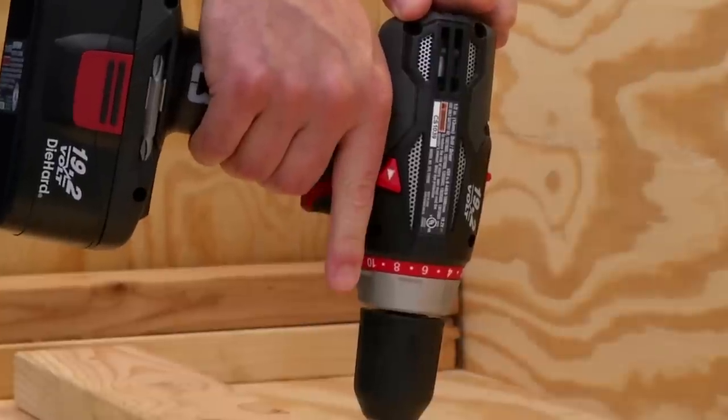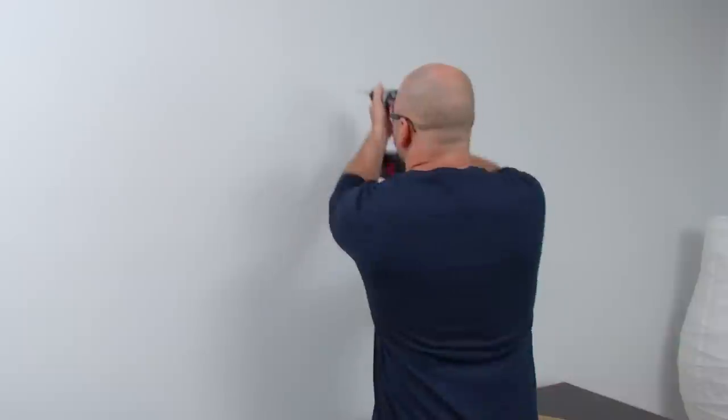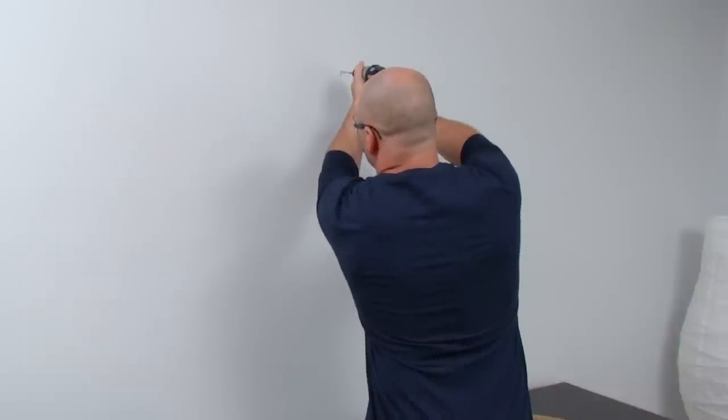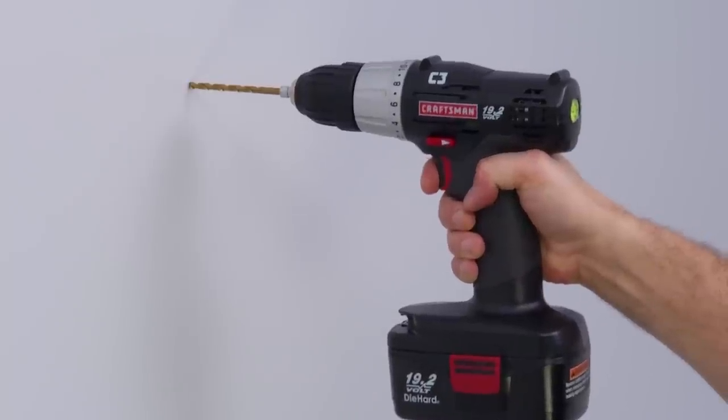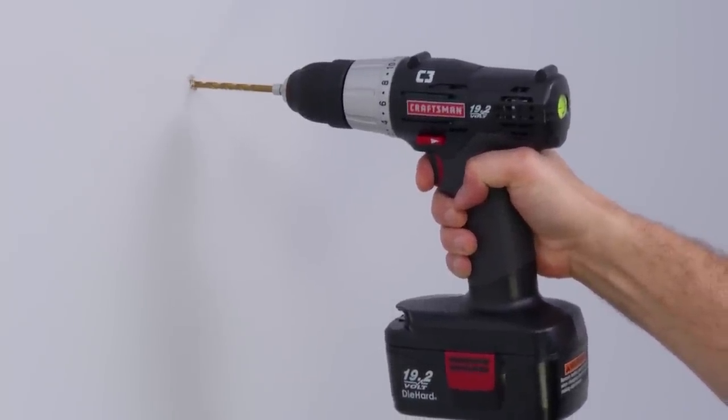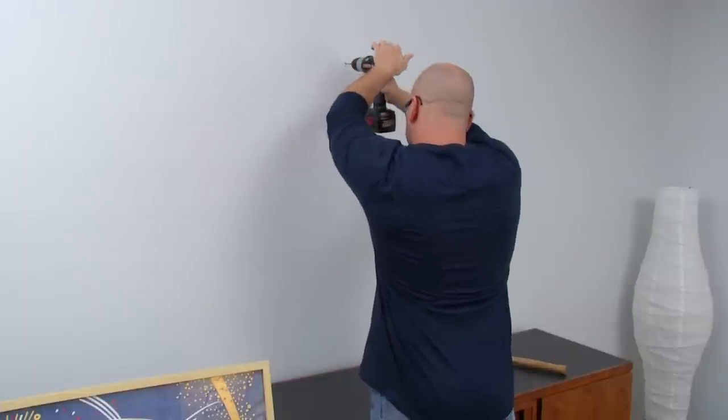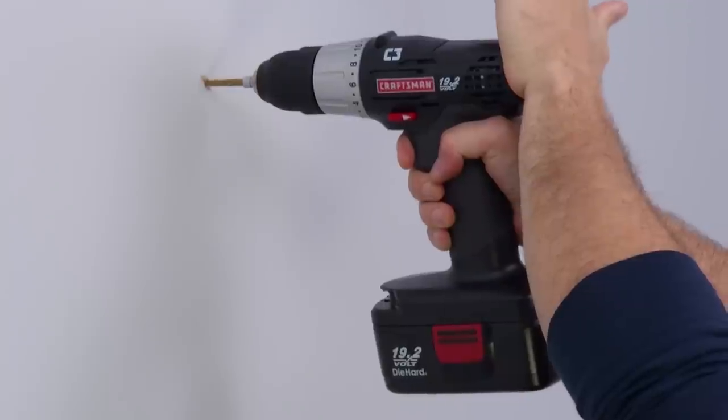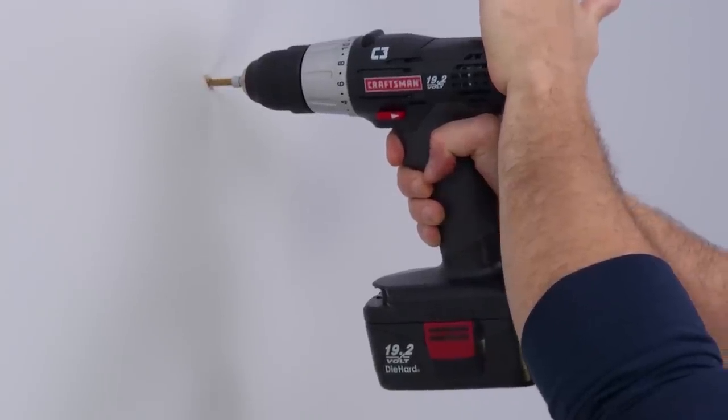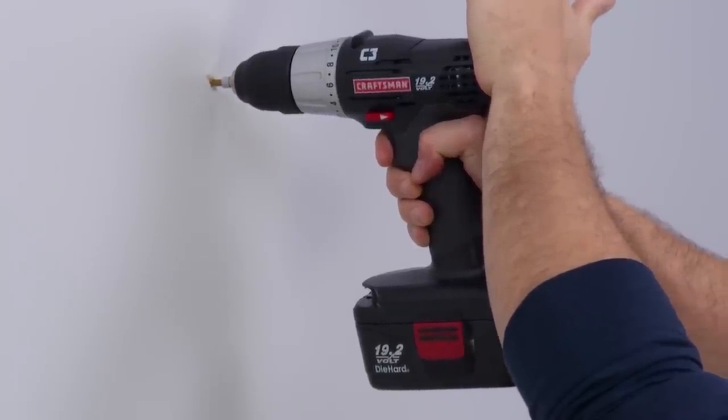To drill a hole, place the tip of the bit against the surface. Pull the trigger part way to start drilling and work up to full speed as you get going so you don't skip off the surface. Keep forward pressure on the drill. If you need to, press on the back for more leverage. Don't cover the vents or you may overheat the motor.